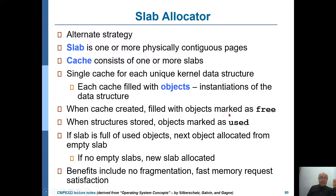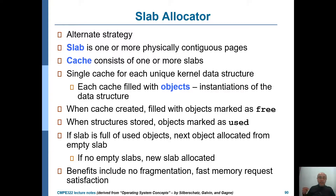When a cache is created, by default it is completely free. When you need an instance of a specific data structure, you create an object of that cache type. You find a cache that is not completely full but also not completely empty — you prefer a slab that is partially full. So you try to fill caches that are partially full first, then continue with the others.